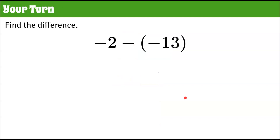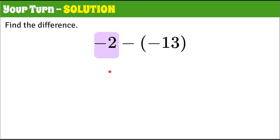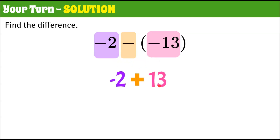Let's try another one: negative two subtract negative 13. Find the difference — pause now and come back when you're ready. Welcome back. Using keep, change, opposite: keep negative two, change to addition, and the opposite of negative 13 is positive 13. Negative two add 13 is positive 11.